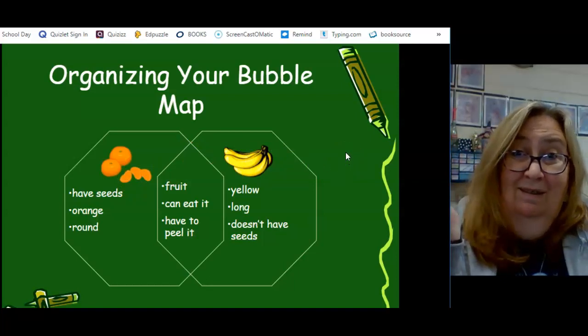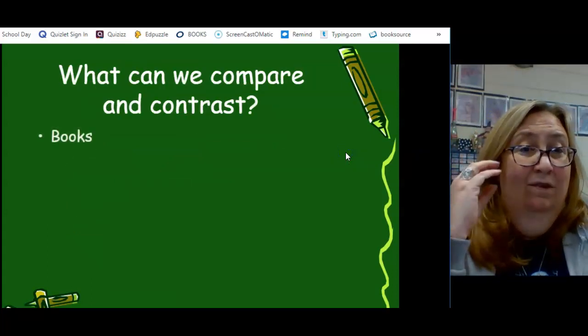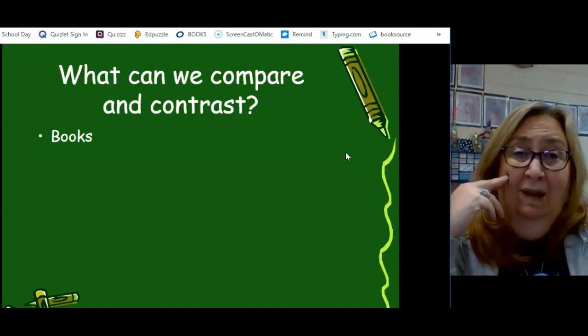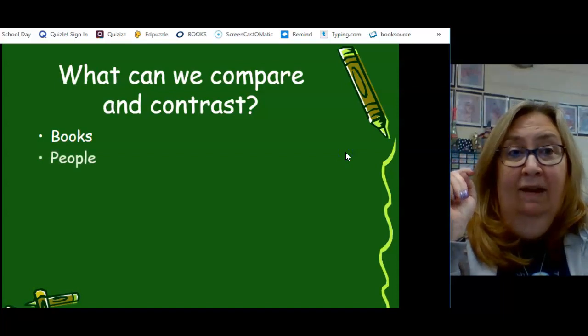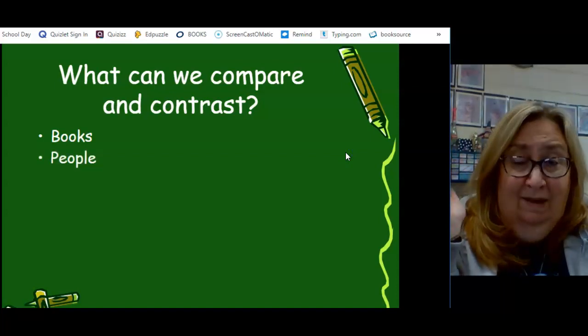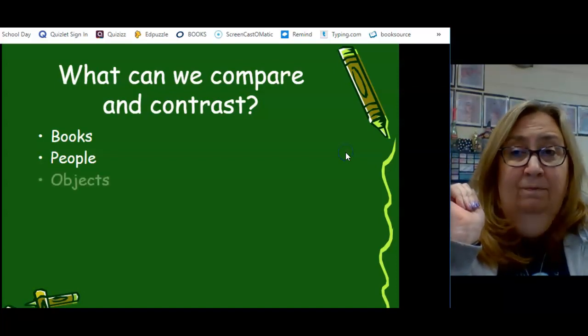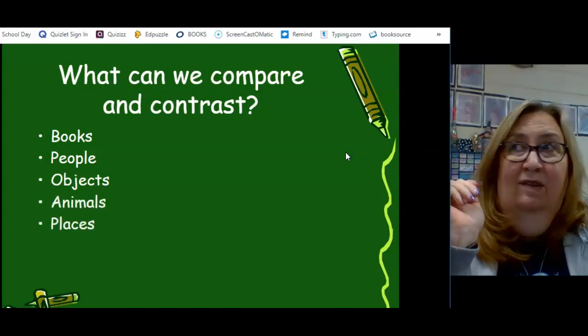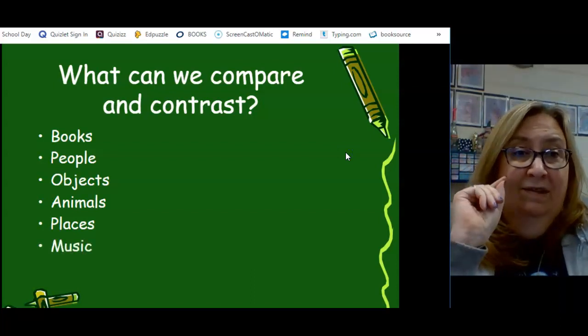That's a review, right? So, we can compare and contrast anything. We can do books. I can compare and contrast Holes and The Watsons Go to Birmingham. It might be really tricky because they're not very much alike, but I can do it. I can find two people, any two people in the whole world, and I can find things the way that they're the same, and I can find things that show us how they're different. Any objects, any animals, any places, any movies, any songs. You can do it with any two things. As long as you can find one thing that's the same and one thing that's different, you can compare and contrast things.